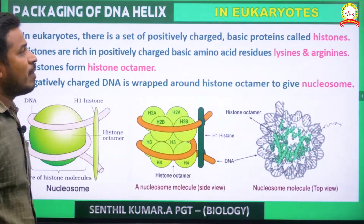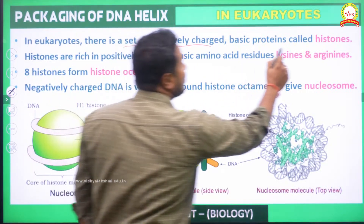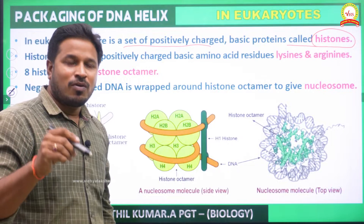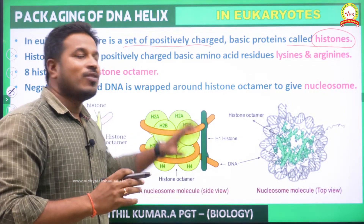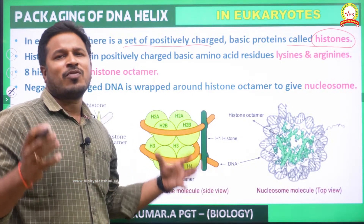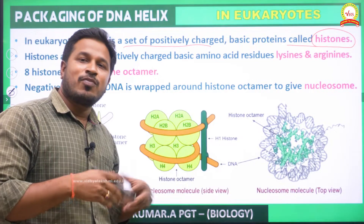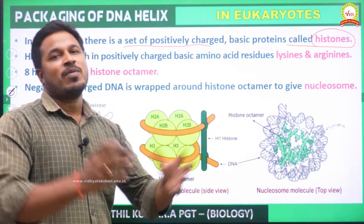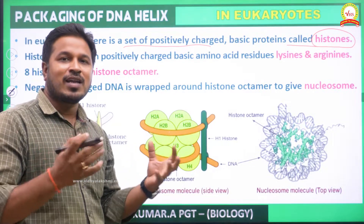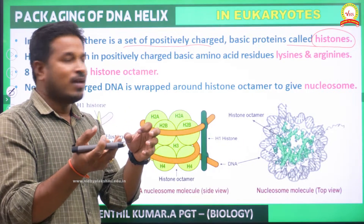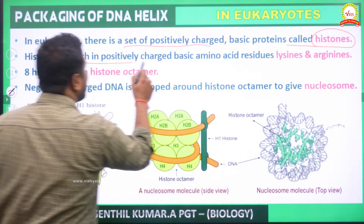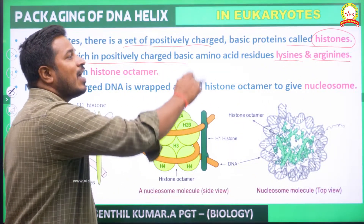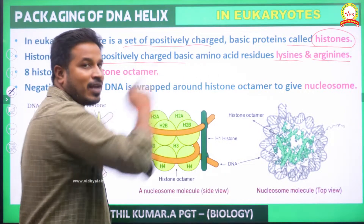In the case of eukaryotes, there is a set of positively charged basic proteins called histones. Histones play a very important role in the condensation of genetic material in eukaryotes. There are various kinds of proteins, each composed of different proportions of amino acids. Histones are rich in positively charged basic amino acid residues — namely lysine and arginine.